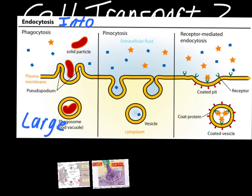Pinocytosis is taking in smaller things. I like this part of the diagram because it clarifies something: this is the extracellular fluid, the space outside the cell; this is the cell membrane; and this is the cytoplasm, which means it's inside the cell. So we're going from outside, through the membrane, to come inside the cell. Pinocytosis brings in smaller particles, maybe some proteins — nothing quite as large as what's brought in during phagocytosis.